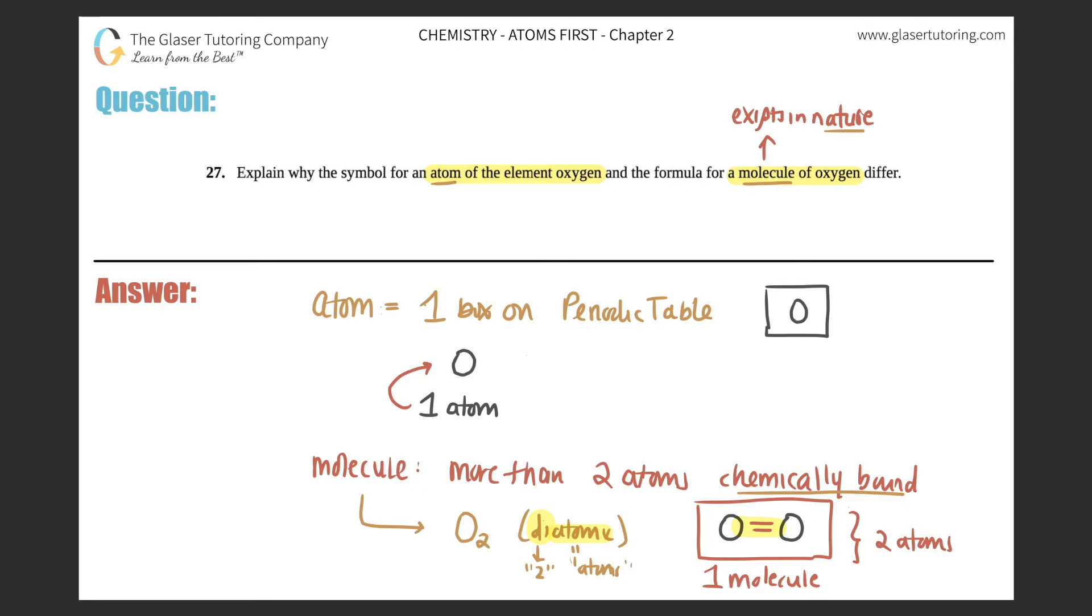There's no molecule here, it's just a single atom. So that's the difference, especially for the symbol. They said explain why the symbol for an atom of oxygen is different from the molecule, because the symbol for an atom is just O. So, comparing the symbol for a molecule would be O2 for oxygen because it is a diatomic in nature.